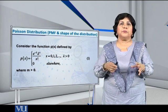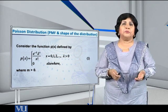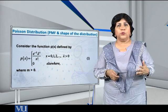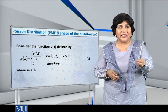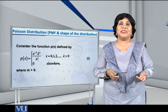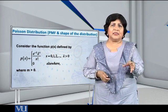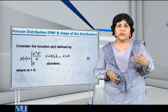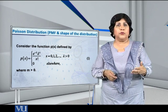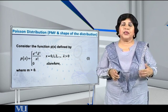That is why the condition lambda greater than zero is imposed — it ensures that lambda raised to x is also non-negative. The denominator is x factorial. The possible values of x are 0, 1, 2, and so on, so zero factorial equals 1, two factorial equals 2, and so on — all positive. Therefore, the first condition that P(x) is greater than or equal to zero for every value of x has been verified.